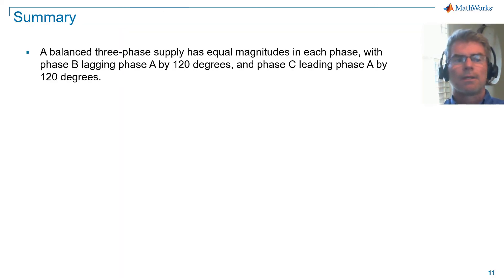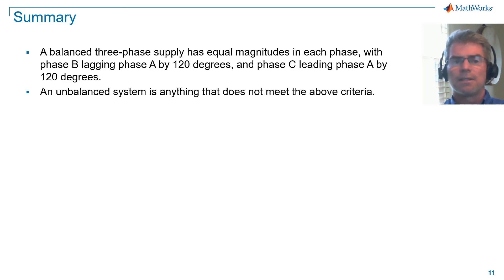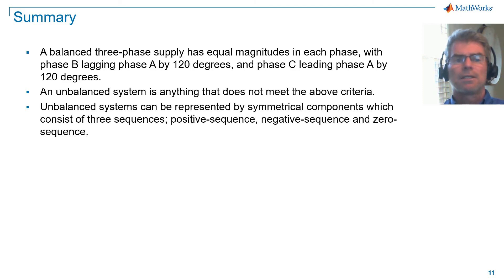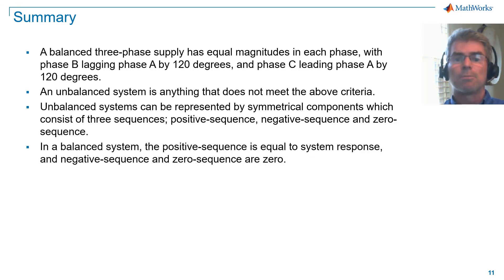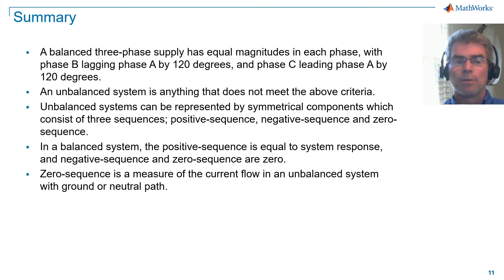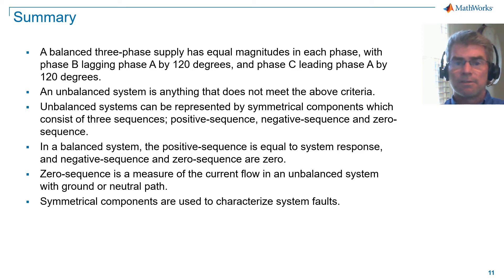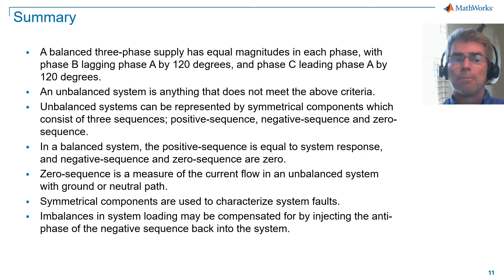In summary, a balanced three-phase supply has equal magnitudes in each phase, with phase B lagging phase A by 120 degrees and phase C leading phase A by 120 degrees. An unbalanced system is anything that does not meet the above criteria. Unbalanced systems can be represented by symmetrical components, which consist of three sequences: positive sequence, negative sequence, and zero sequence. In a balanced system, the positive sequence is equal to the system response, and negative sequence and zero sequence are zero. Zero sequence is a measure of the ground or neutral current flow in an unbalanced system which has a ground or neutral path. Symmetrical components are used to characterize faults, and imbalances in system loading may be compensated for by injecting the antiphase of the negative sequence current back into the system. I hope you found this information useful. Thank you for listening.